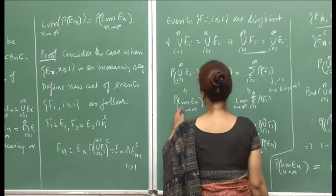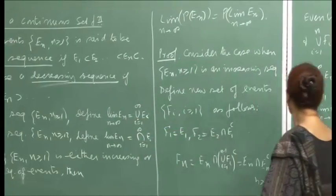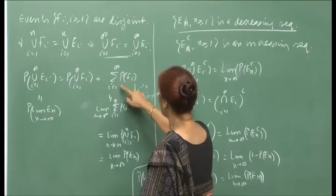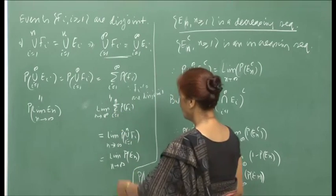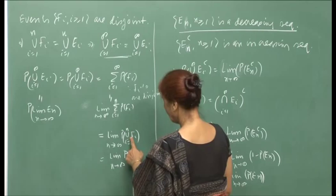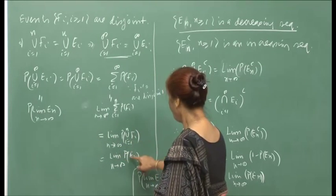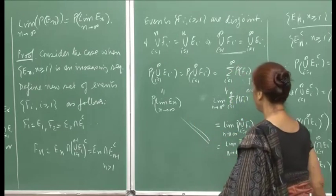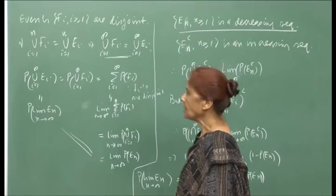On the right side, Σᵢ₌₁^∞ P(Fᵢ) = lim_{n→∞} Σᵢ₌₁ⁿ P(Fᵢ) = lim_{n→∞} P(∪ᵢ₌₁ⁿ Fᵢ) = lim_{n→∞} P(Eₙ), since ∪ᵢ₌₁ⁿ Fᵢ = Eₙ for an increasing sequence. Therefore P(lim Eₙ) = lim P(Eₙ) as n → ∞ for an increasing sequence.